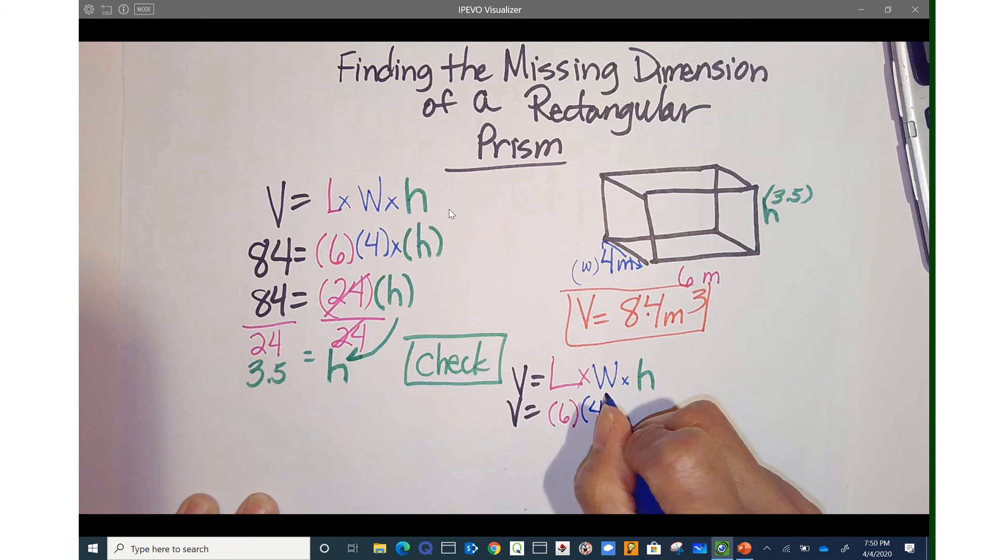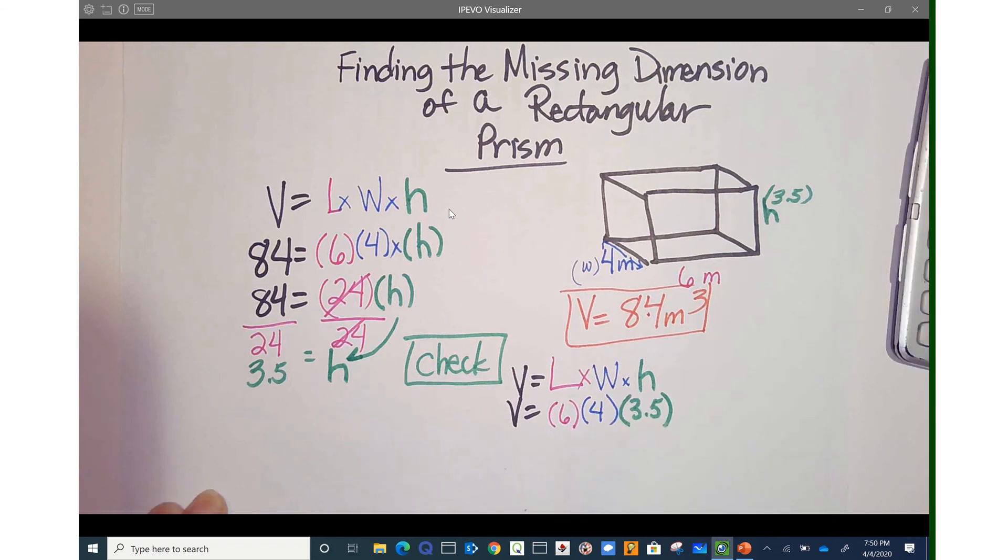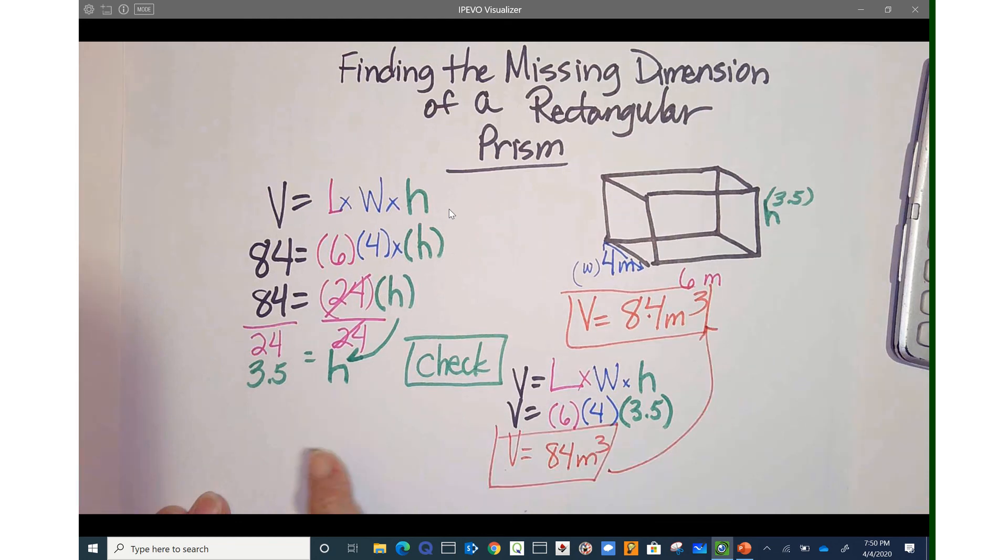I'll use my calculator here. 6 times 4 times 3.5 equals 84. Volume equals 84 meters cubed. This is the same answer as this. So we've checked our work. We know that 3.5 is correct.